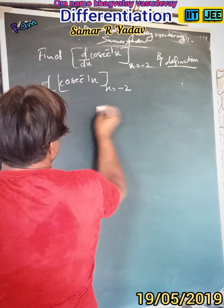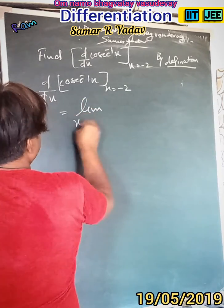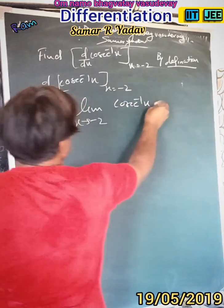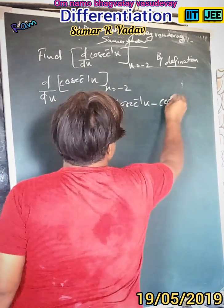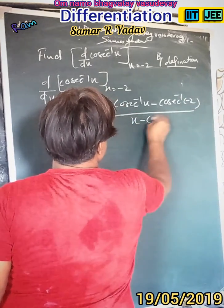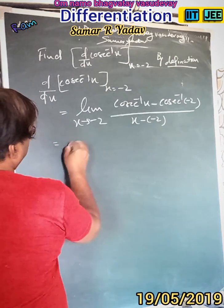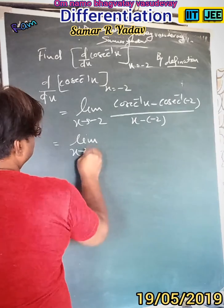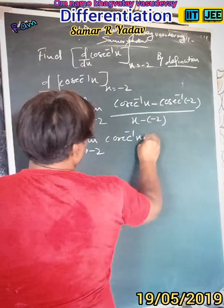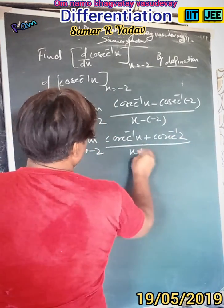At x = -2, this is equal to the limit as x tends to -2, that is [cos⁻¹(x) minus cos⁻¹(-2)] upon [x minus (-2)], which equals limit x tends to -2 of [cos⁻¹(x) + cos⁻¹(2)] upon [x + 2].